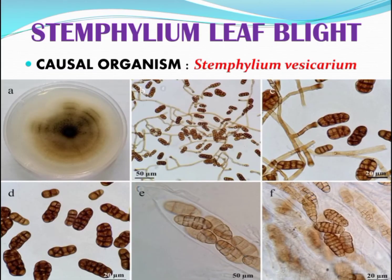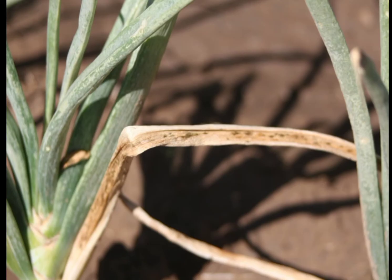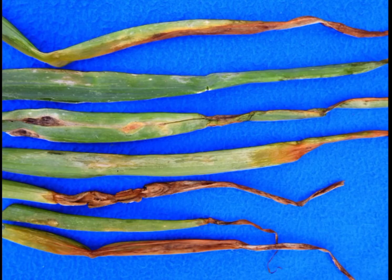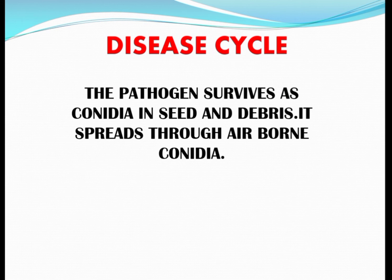The next disease is Stemphylium leaf blight, caused by Stemphylium vesicarium. Symptoms: Small light yellow to brown and water-soaked lesions develop on the leaves. As the lesions expand, they coalesce causing extensive blighting of the leaves. Typically, lesions are found in higher numbers on the side of leaves facing the prevailing wind. The centers of lesions turn brown to tan, then dark olive brown and finally black as the fungus sporulates. Sometimes fruiting bodies called perithecia may appear in infected tissue as small black pinhead-like raised bodies. Favorable Condition: Extended periods of leaf wetness due to rainfall, dew formation, or overhead irrigation during bulb formation and development can result in severe leaf blighting. Disease Cycle: The pathogen survives as conidia in seed and debris and spreads through air-borne conidia.